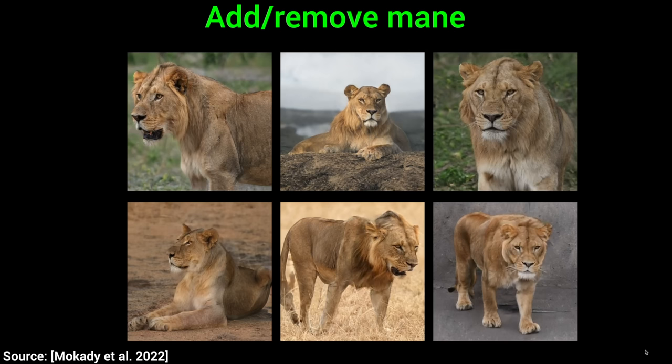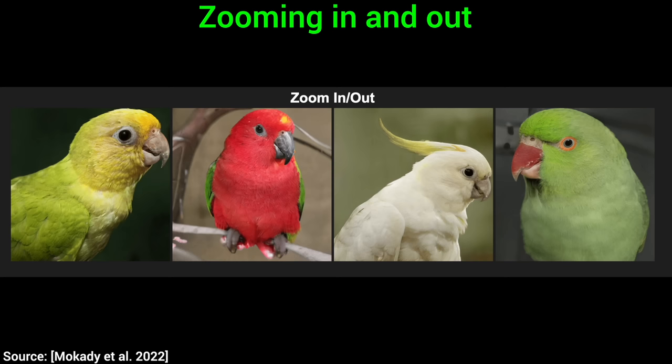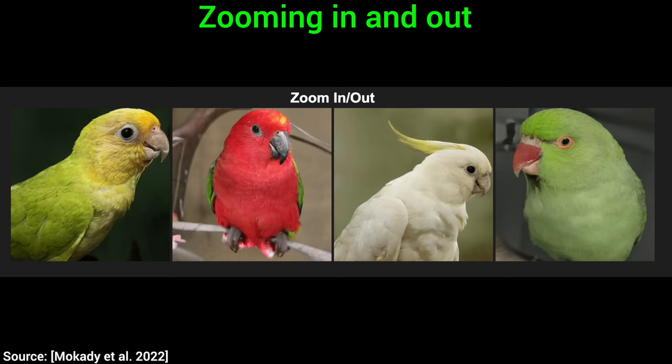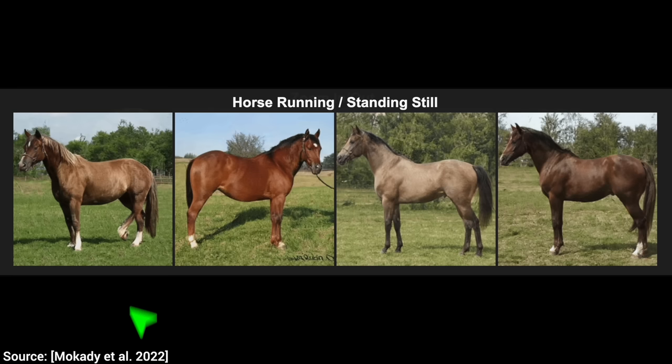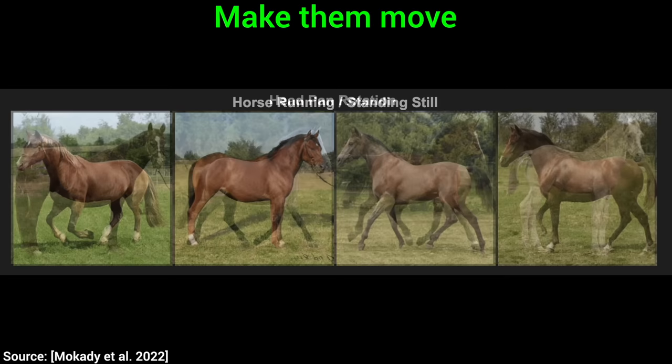What a time to be alive! And if we have just the perfect parrot but it takes up just a bit too much of the frame, not a problem. Zooming in and out of images is also possible, and it fills in the remaining parts of the image with sensible information — more of the parrot, or more background. How cool is that? And if we have created the perfect horse image with this AI and we are yearning for a little more action, not a problem — it can even make them run. Some of the intermediate images are not perfect, so this might not pass as a video yet, but as images, incredible.